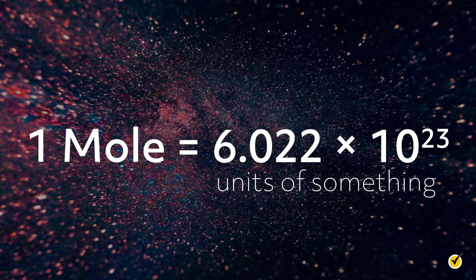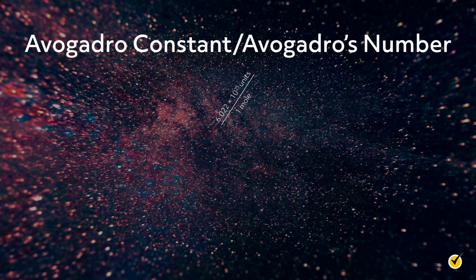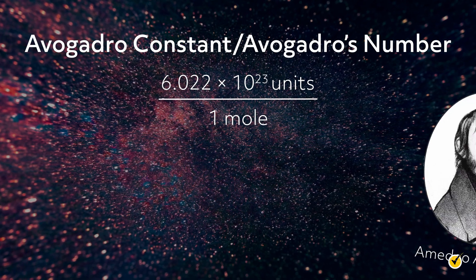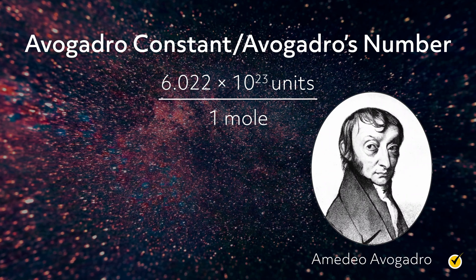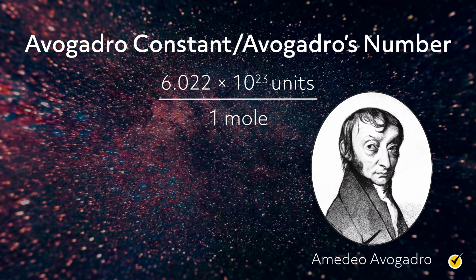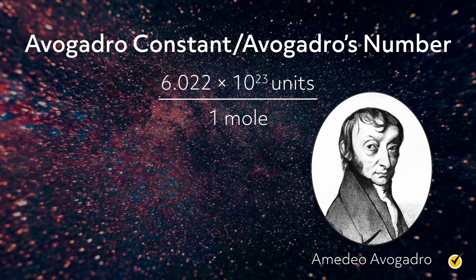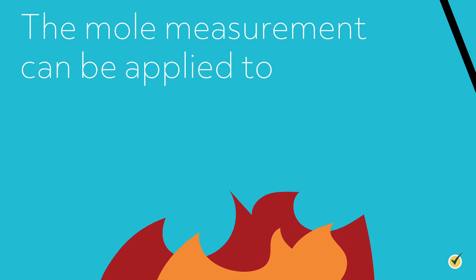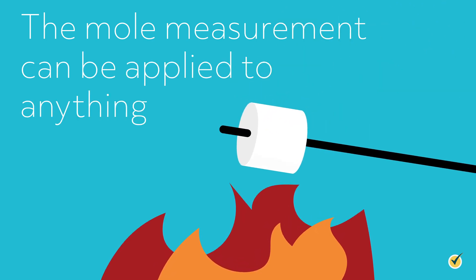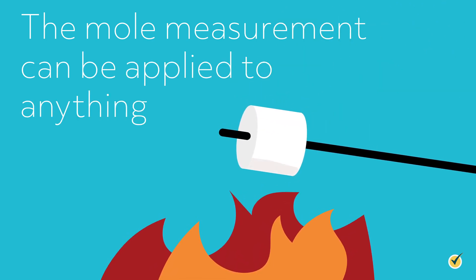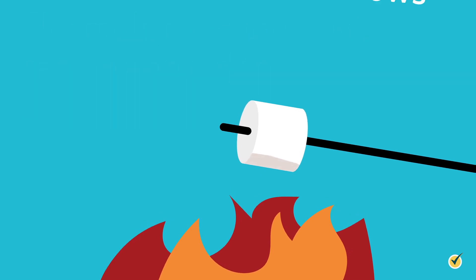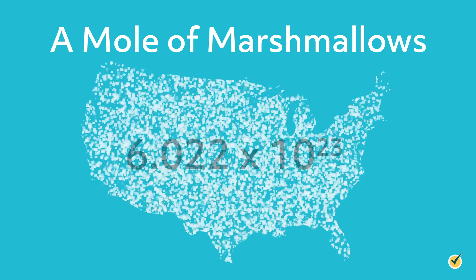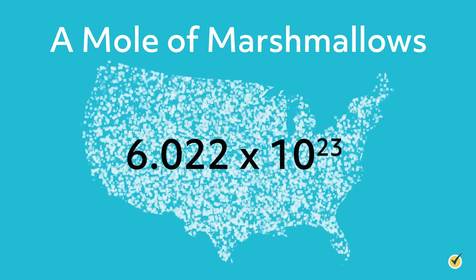This is a famous number known as the Avogadro constant or Avogadro's number, named after Amadeo Avogadro, an Italian scientist from the late 1700s, who first documented the relationship between the volume of gas and number of gas particles. We can apply the concept of a mole to anything, not just molecules or atoms or anything related to a chemical reaction. For example, a mole of marshmallows would mean 6.022 times 10 to the 23rd marshmallows.